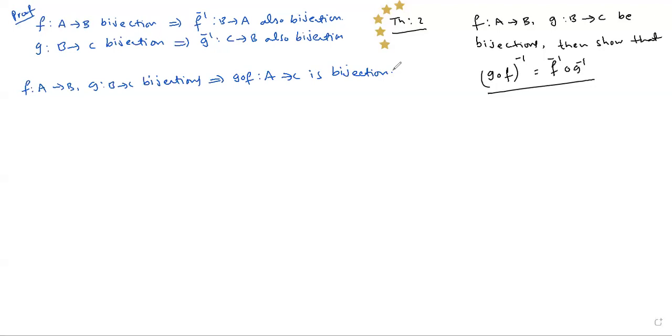If G circle F: A→C is bijection, then G circle F whole inverse: C→A is also bijection.